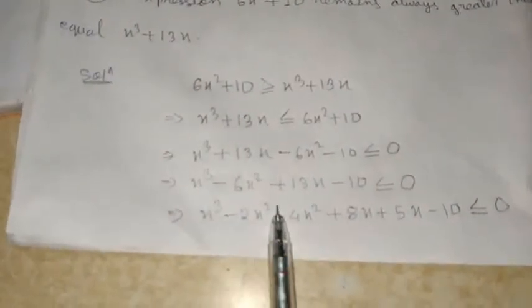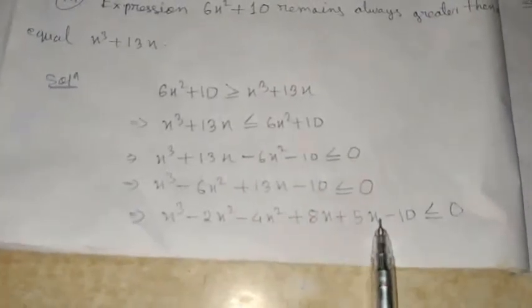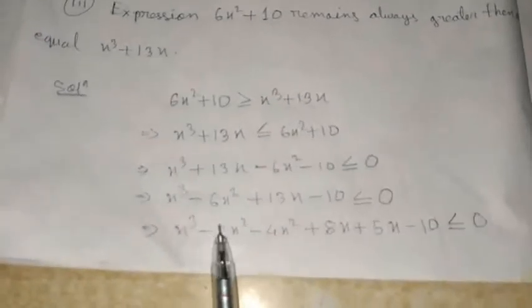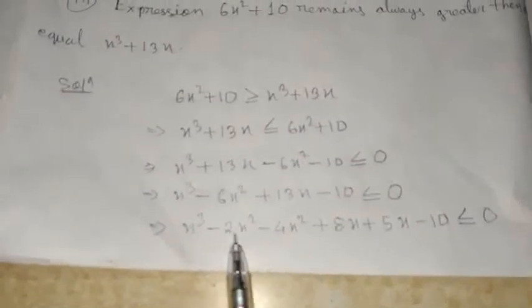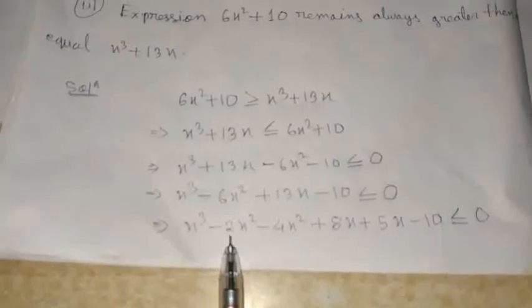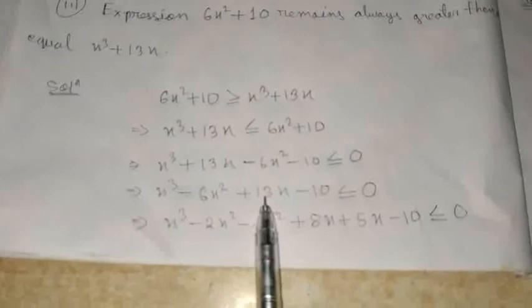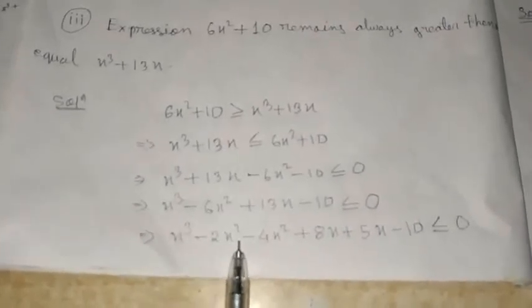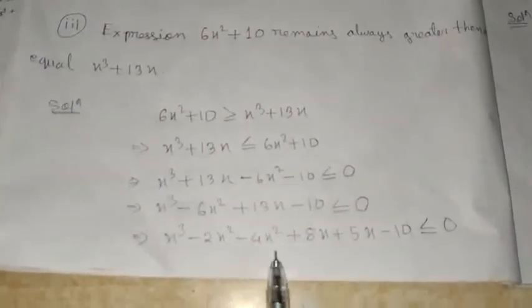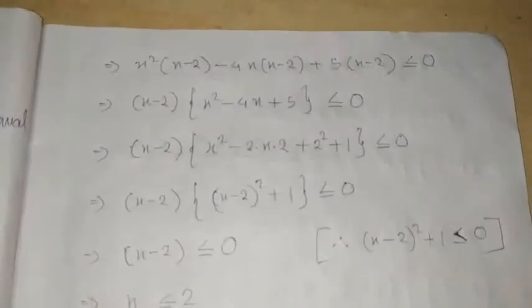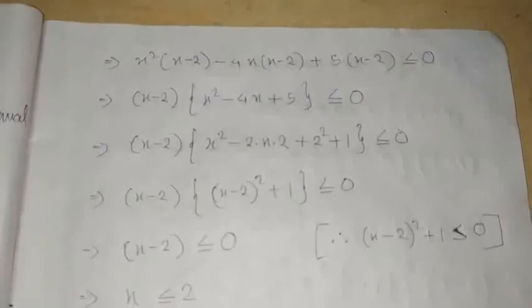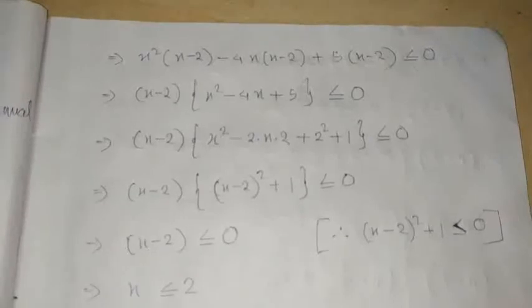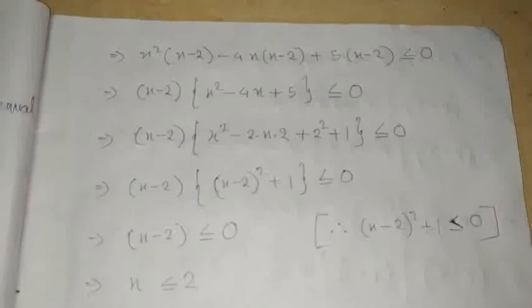We split 6x squared into 2x squared and 4x squared: x cubed minus 2x squared minus 4x squared plus 8x plus 5x minus 10 less than or equal to 0. From x cubed minus 2x squared we take common x squared, from 4x squared plus 8x we take common 4x, and from 5x minus 10 we take common 5. This gives x squared(x minus 2) minus 4x(x minus 2) plus 5(x minus 2) less than or equal to 0. Taking out (x minus 2): (x minus 2)(x squared minus 4x plus 5) less than or equal to 0.